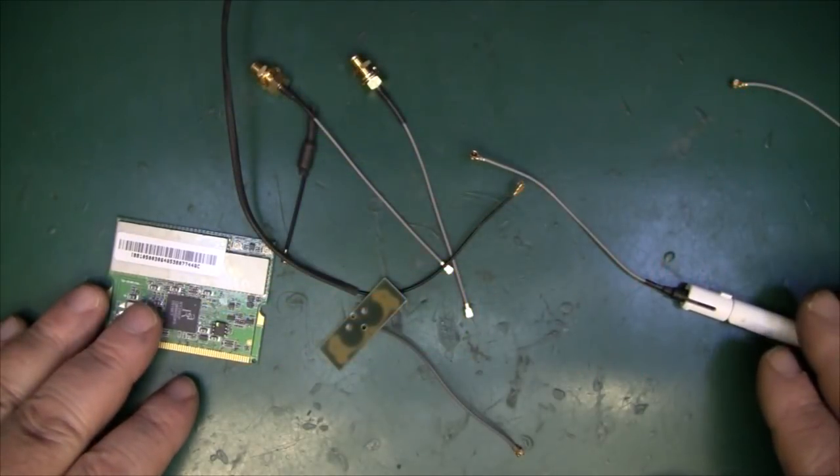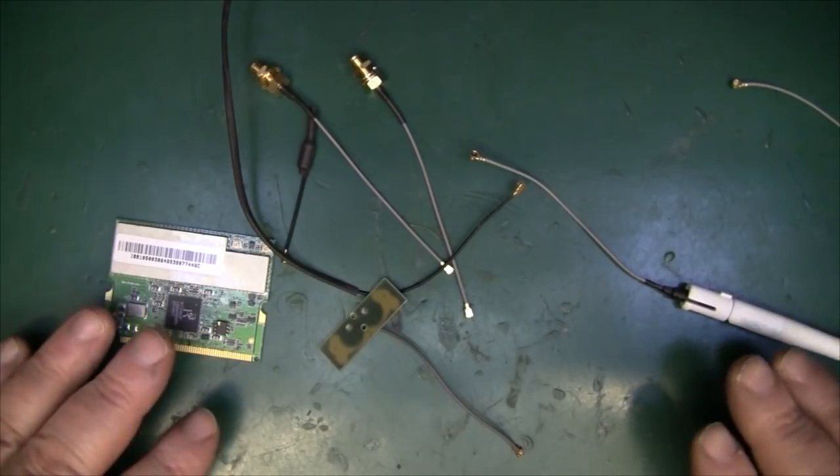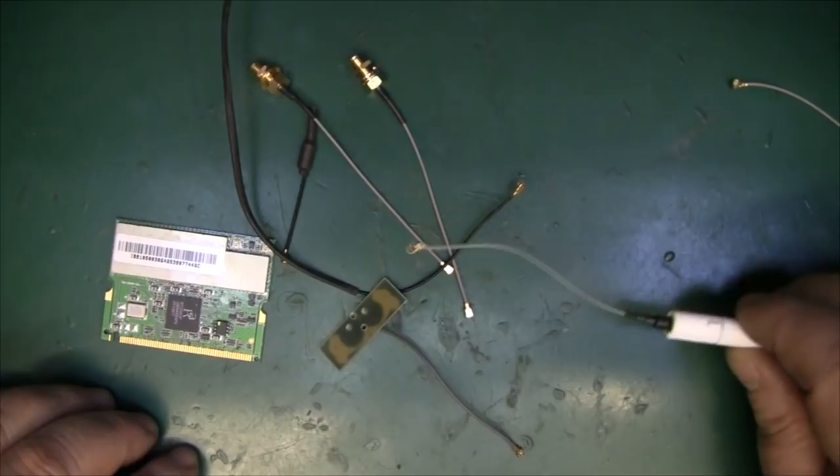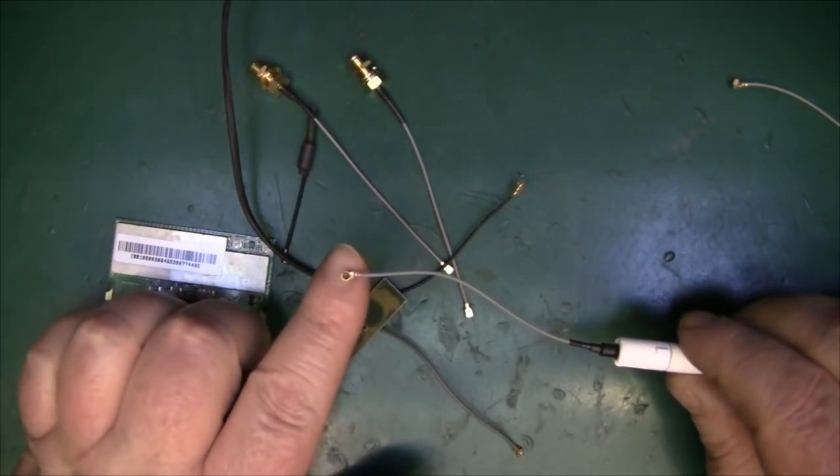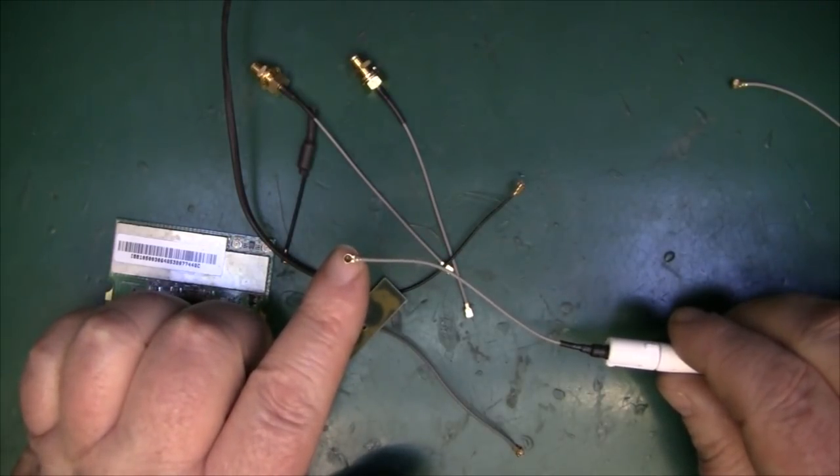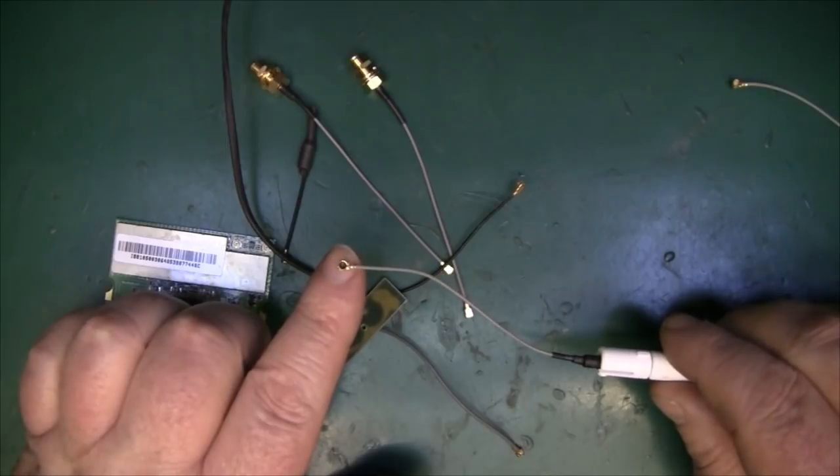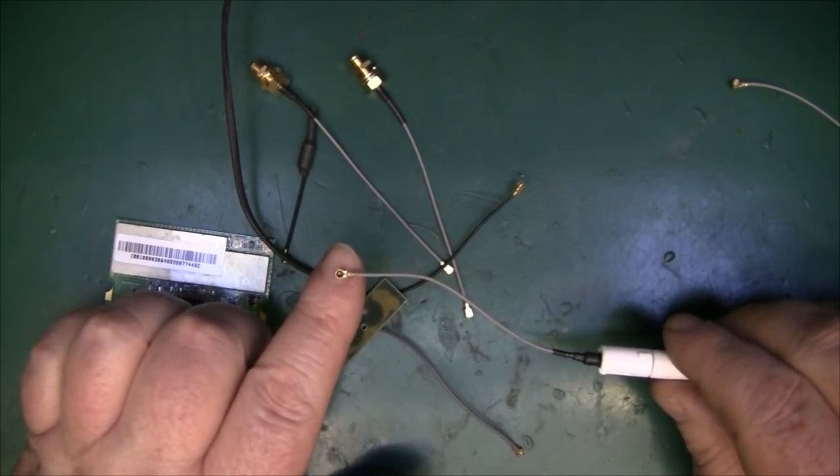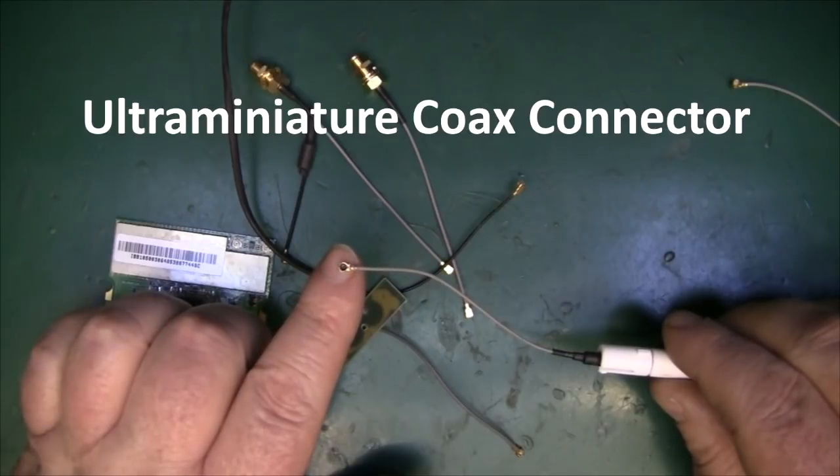Now for some time I've been wanting to make myself a Hi-Rose connector to SMA connector. So these are all little Hi-Rose connectors, they're known by about five or six different names. Another common name for these is the UMCC, the Ultra Micro Coaxial Connector.